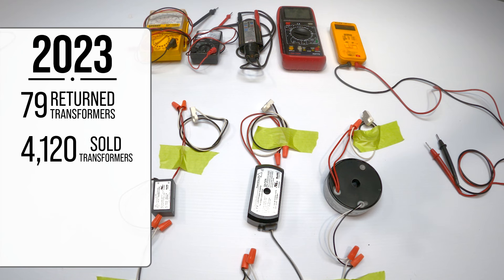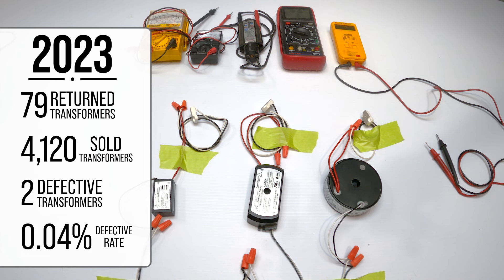In addition, out of the 79 returned, only two were defective, about 0.04% defective. And we think those two transformers were actually put in backwards.